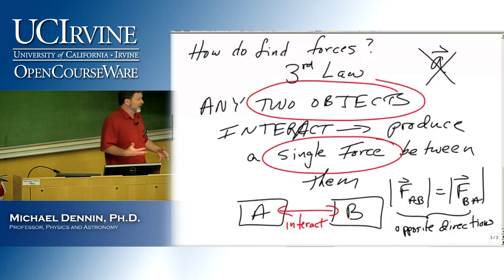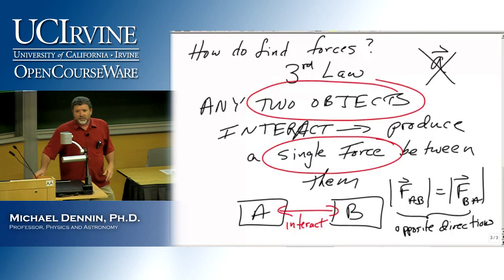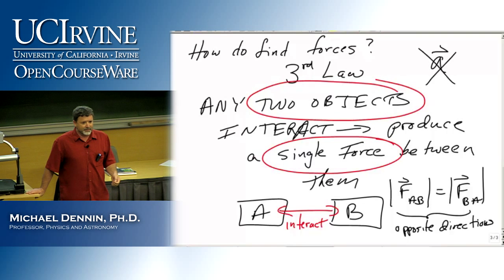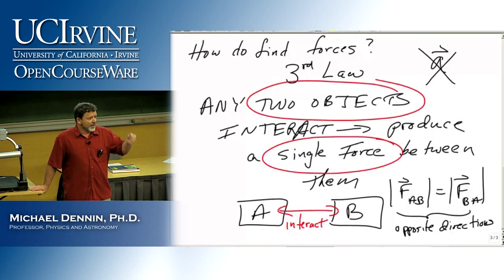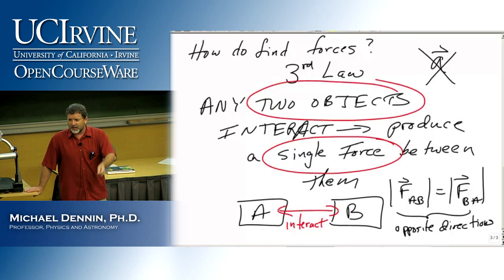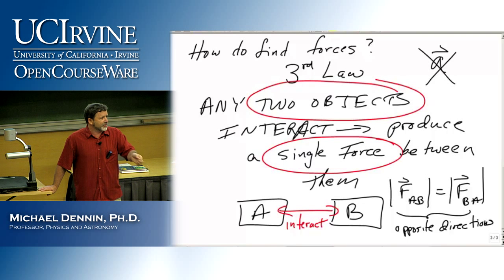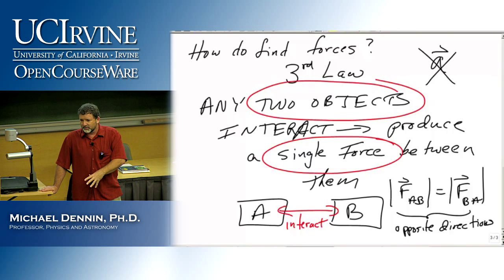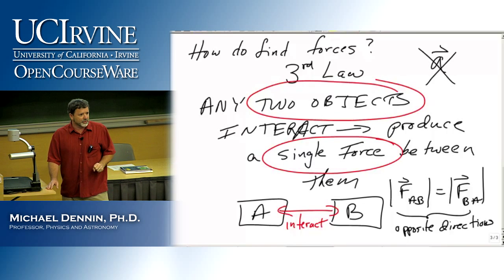If you find yourself saying, 'due to the third law the forces are equal and opposite, so they cancel, so they add to zero, so the acceleration is zero' — what mistake did you just make? You used the third law to make an acceleration. You absolutely cannot do that. What you do is use the third law to find all the forces on an object, and then from there use the second law for that object. You have to keep the two separate.